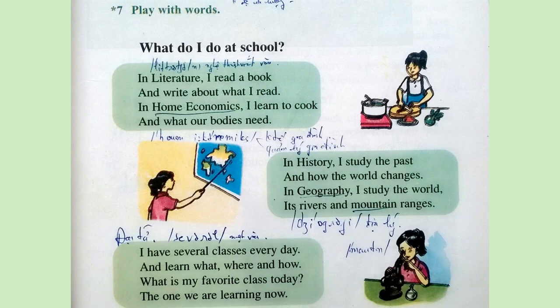Exercise 7: Play with words. What do I do at school? In literature, I read a book and write about what I read. In home economics, I learn to cook and what our bodies need. In history, I study the past and how the world changes. In geography, I study the world, its rivers and mountain ranges. I have several classes every day and learn what, where, and how. What is my favorite class today? The one we are learning now.